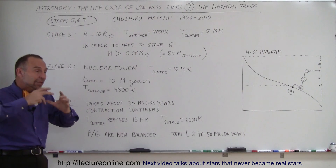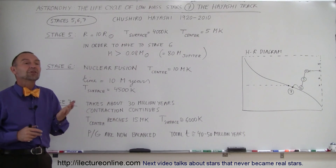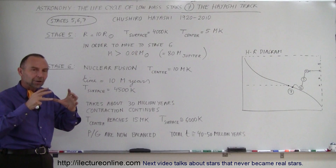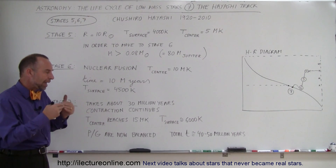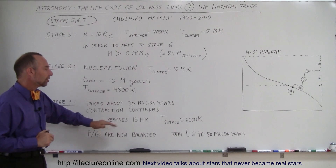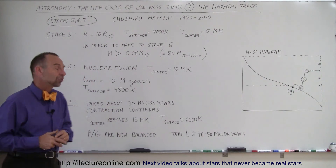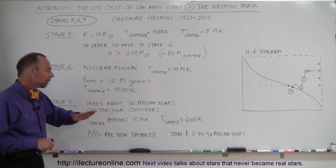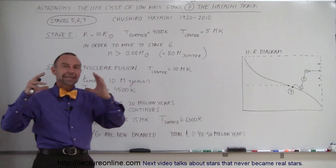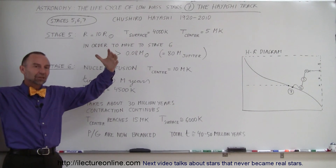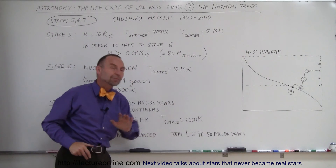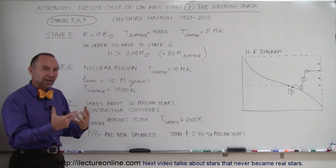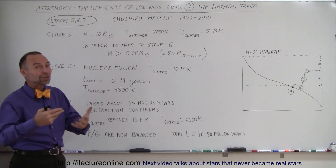Temperatures at the center continue to increase until 15 million Kelvin is reached. At that point, since pressure and gravity are balanced, the nuclear fusion process settles into a stable pattern and temperature stabilizes at 15 million degrees Kelvin at the center, with the surface reaching about 6,000 Kelvin — the Sun's surface temperature is about 5,800 Kelvin. Pressure and gravity are now totally balanced, and the total time from the beginning of star formation to a main-sequence star is about 40 to 50 million years.